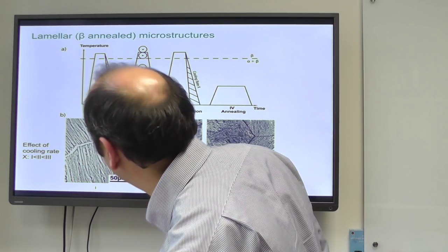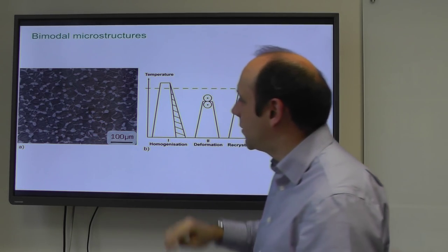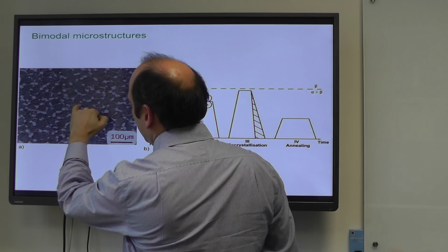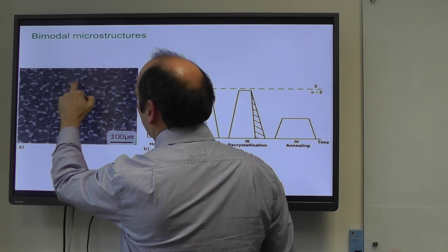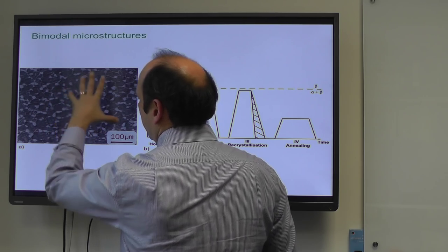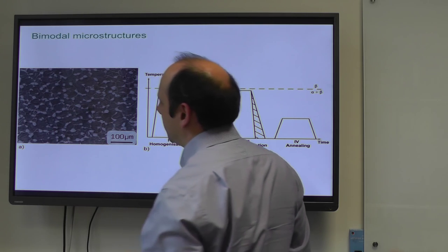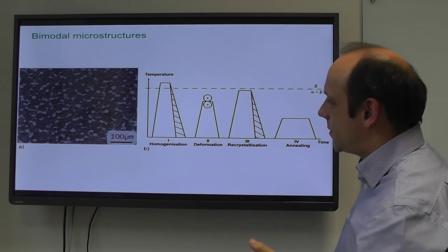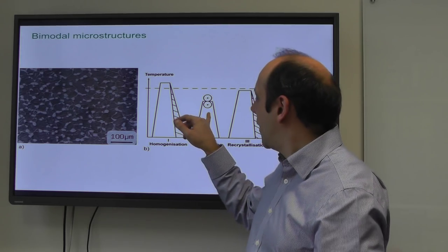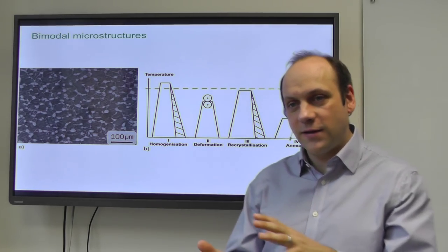To obtain a bimodal microstructure with some primary alpha - a mix of equiaxed primary alpha grains and plates in between - you again start with homogenization above the transus. You then do your deformation below the transus to break up all the plates. Some of these beta sub-grains form from the same parent large beta grain at slightly different orientations, and you nucleate alpha on those in between the primary alpha, then plates form in between.